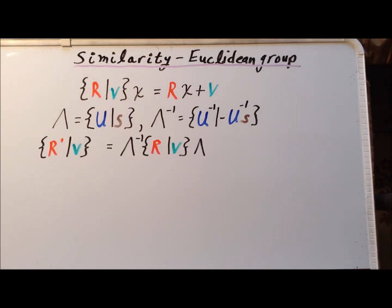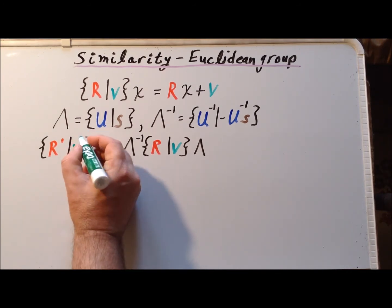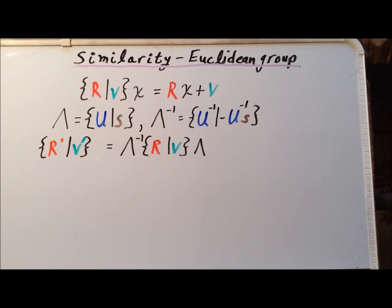We can find a Euclidean transformation that is similar to R slash V, which we're going to call R prime V prime. We do it by first applying the inverse of lambda, and then afterwards we apply the operation lambda. Notice the similarity, pun intended, between this type of representation for a similarity transformation and one that we would use if we were simply concerned with 3×3 matrices. So in a very similar form, we have that R prime V prime is similar to R V.